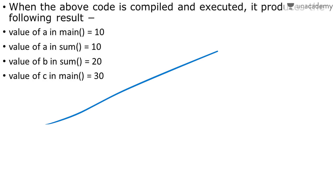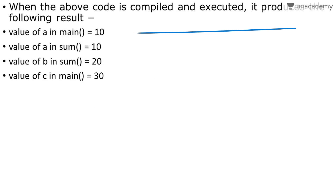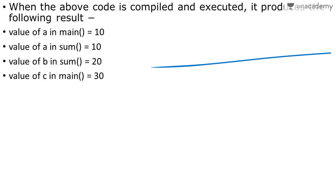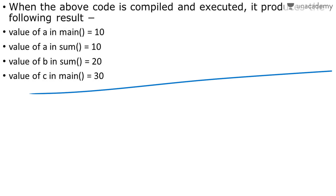Looking at the output: value of a in main is 10, a in sum is 10, b in sum is 20, and value of c in main is 30. These are the scope rules and the formal and actual parameters in C.